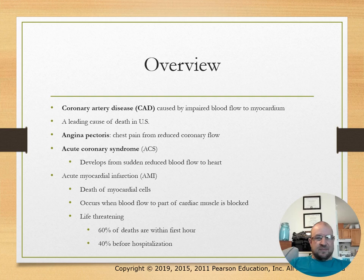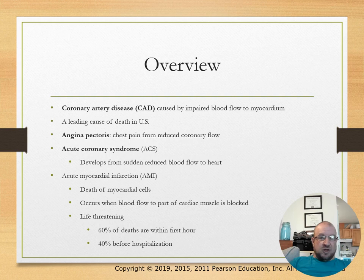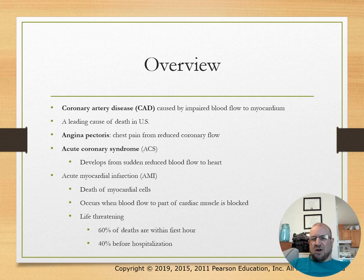Angina pectoris, or angina, is chest pain resulting from reduced coronary blood flow. It involves an imbalance between myocardial blood supply and demand, caused by coronary artery disease, atherosclerosis, vessel constriction, or hypermetabolic conditions. Other triggers include anemia, heart failure, ventricular hypertrophy — or enlarging of the ventricles — and pulmonary disease.